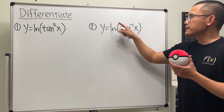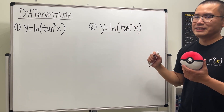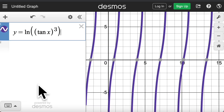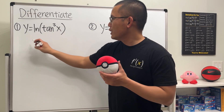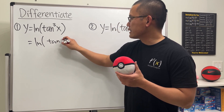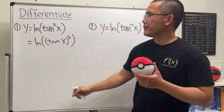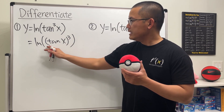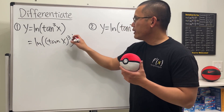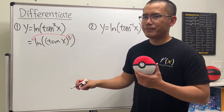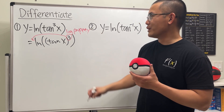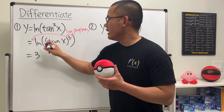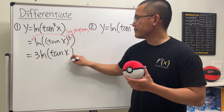Let's do this first one. Notice this notation means we will just have ln of tangent of x raised to the third power. By the log property, we can take the power and put it in the front — but not the negative one, because that is just the log property, not the power rule for the derivative. So this is just 3 times ln of tangent of x.